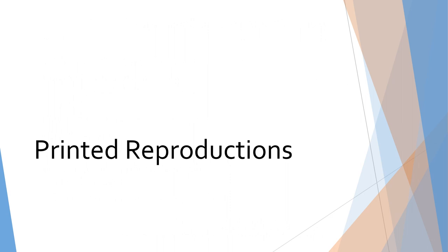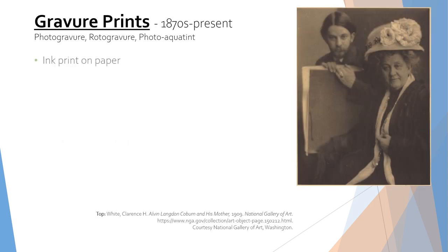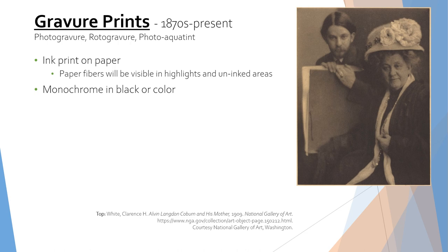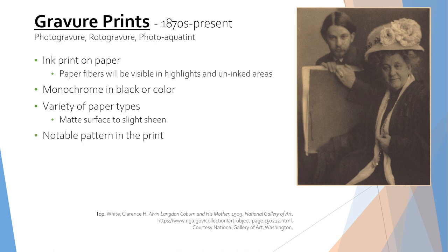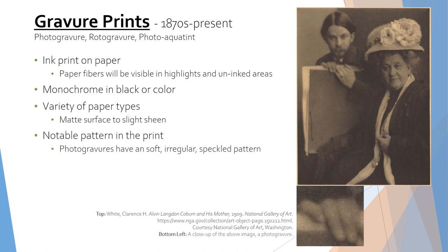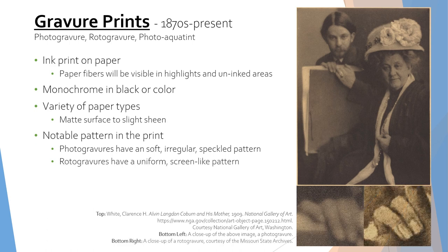Finally, we will cover common printing methods for reproducing photographs. Gravure prints were developed in the late 1800s and create ink prints of photographs from etched metal plates or rollers. The paper fibers will be visible in the highlights or the uninked areas of the print. The image will be a monochrome, most often in black ink, but they can be made in a single monochrome color and can be printed on a variety of paper types. The prints tend to have a matte surface texture, but they can have a slight sheen in the highly inked areas; if coated paper is used, they will be shiny. Gravure prints have a notable pattern due to the etching process. Photogravures, which use flat metal plates, have an irregular speckled pattern. Rotogravures, which use metal rollers, will have a uniform screen-like pattern and are still used for printing modern advertisements.